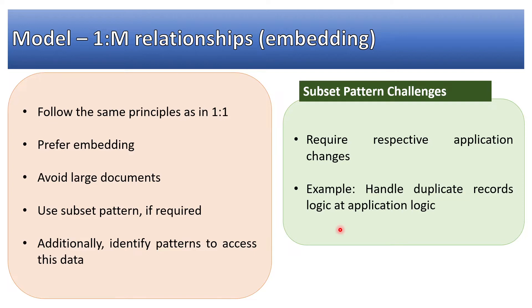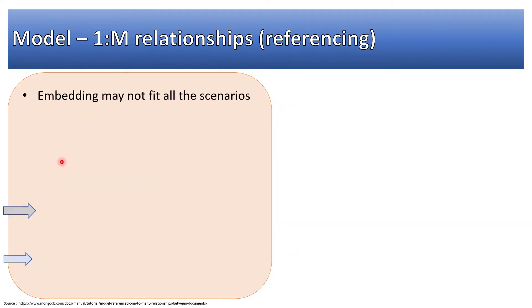So this is the biggest constraint with subset pattern. Where should we use one-to-many relationships using referencing? Again, where embedding may not fit all the scenarios.